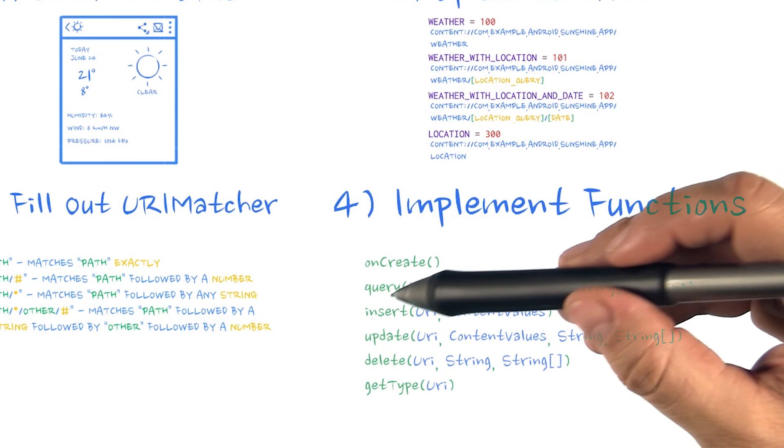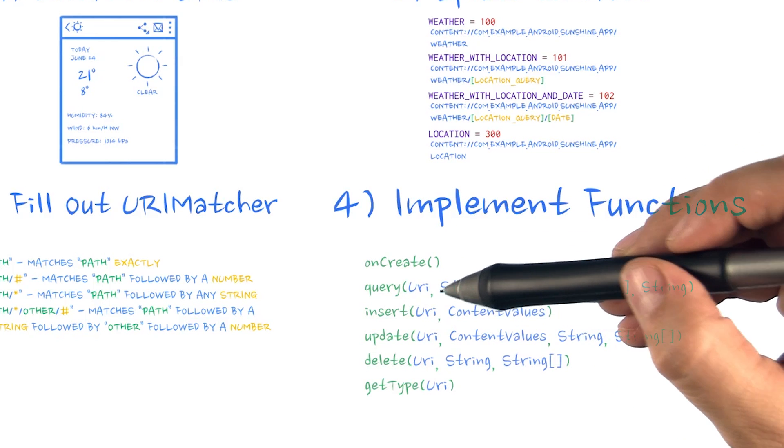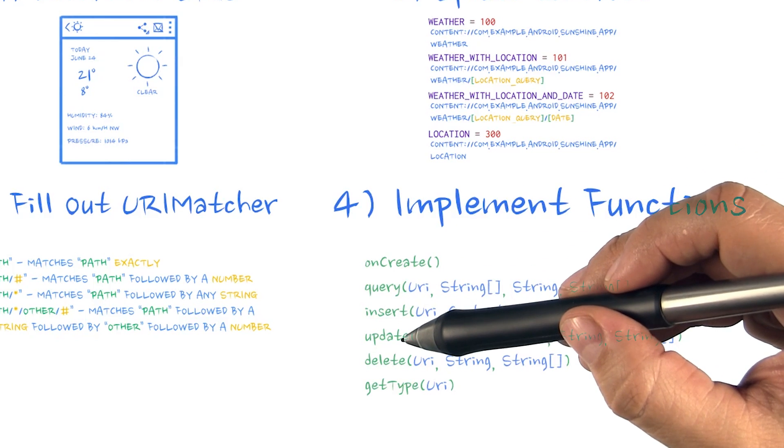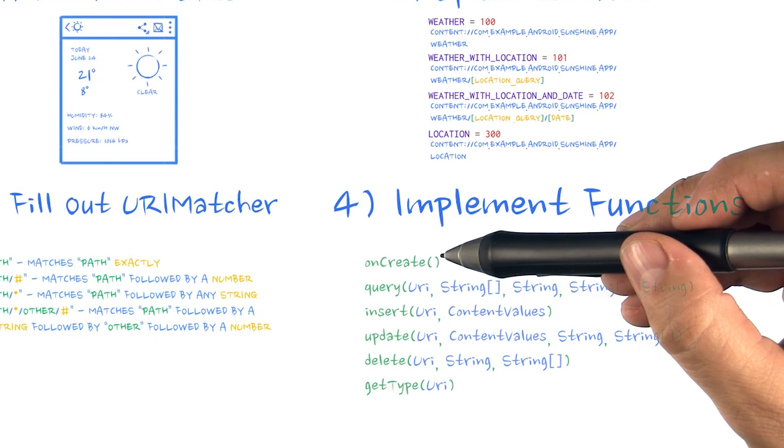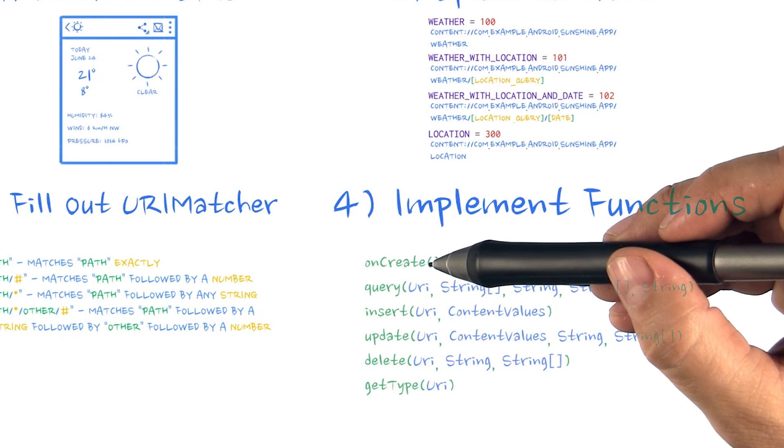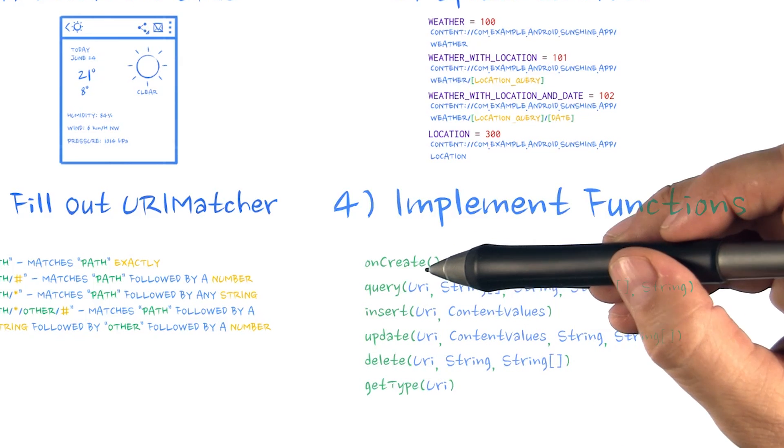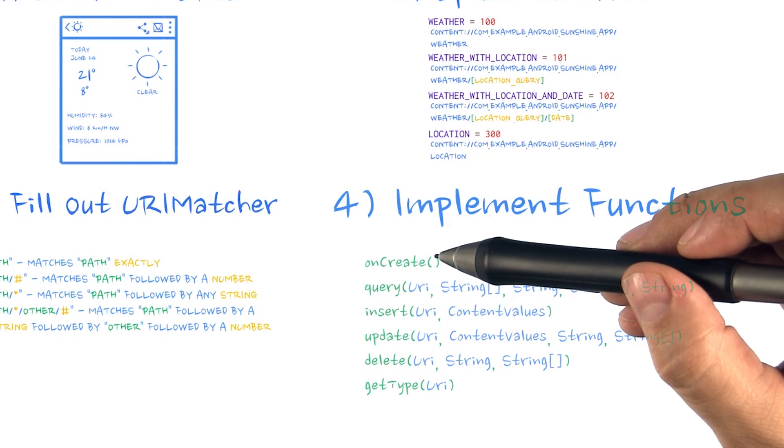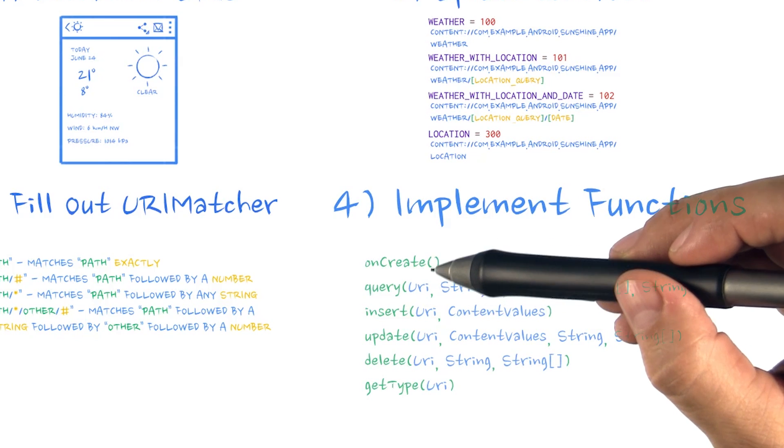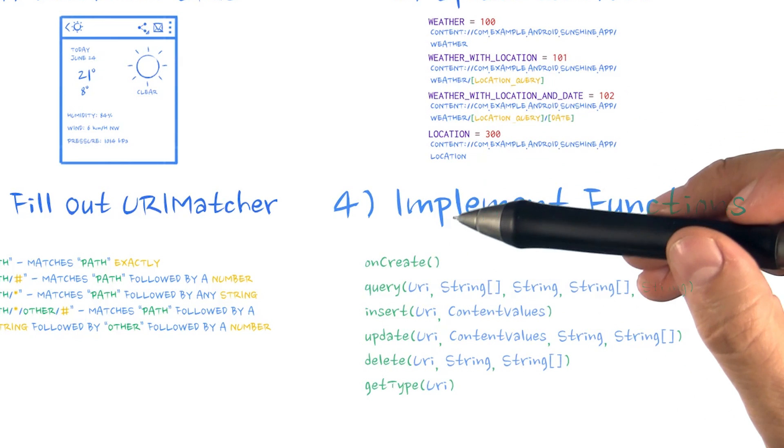We then implemented the content provider query functions, followed by the write operations: insert, update, and delete. Finally, we talked about the optional bulk insert function to make updates to our database in a single transaction. This performs much faster and causes less wear and tear on the flash chip, compared to updating the database in multiple transactions.